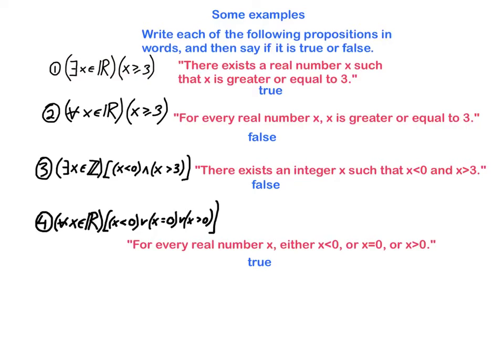Now number 2 is exactly the same as number 1, except we've changed the quantifier to this universal quantifier. It says for every real number x, x is greater than or equal to 3. So that's false because it's impossible for, it's not the case that every real number is greater than or equal to 3. Some of them are less than 3.